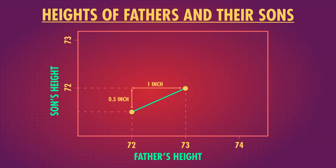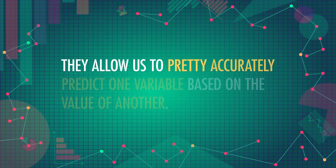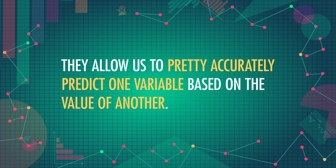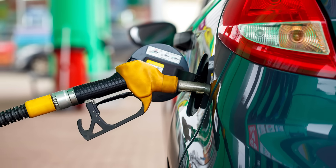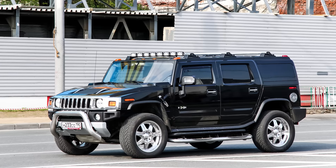Note that Pearson used feet and inches in his paper, so we will too. Lines are a great way to describe a relationship because they have a nice formula: y equals mx plus b, just like you learned in algebra. The m, or slope, tells you that an increase of one inch of a father's height leads to an increase of m in the son's height — about half an inch in Pearson's paper. That allowed Pearson to make a prediction about the height of the son from the height of the father. They allow us to pretty accurately predict one variable based on the value of another — like the relationship between car weight and gas efficiency allowing us to be pretty sure a smart car gets better mileage than a Hummer.